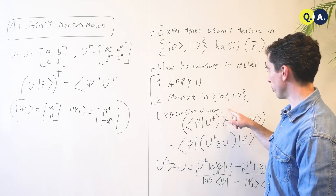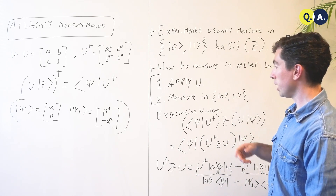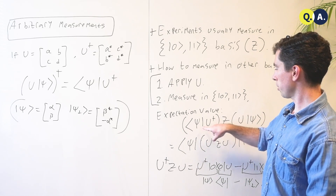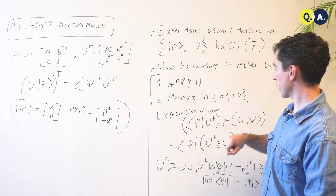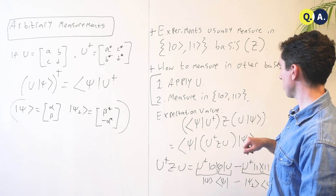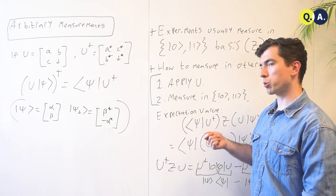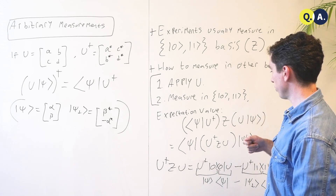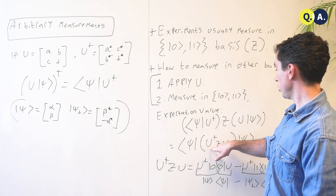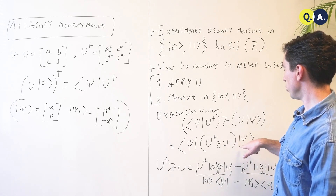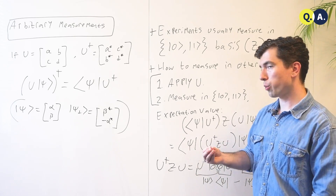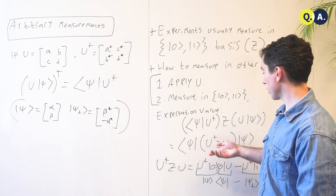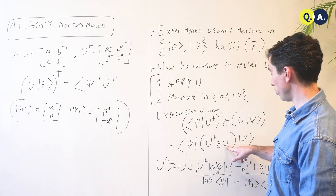So the expectation value of this measurement — if we first apply U to |ψ⟩ — that replaces |ψ⟩ with ⟨ψ|U† in the bra and U|ψ⟩ in the ket. Then we take the familiar sandwich product to determine the expectation value of the operator, and we end up with ⟨ψ|U†ZU|ψ⟩. So it's as if we had our original state |ψ⟩ and instead of measuring Z, we measured U†ZU.